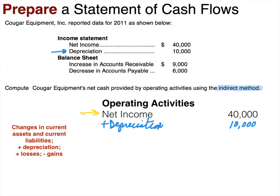We're now done with the income statement information and we move on to the balance sheet to analyze current assets and current liabilities. Accounts receivable increased — accounts receivable increases when we sell on account and haven't yet collected cash. Under accrual accounting, revenue is recorded when earned, so that $9,000 has already affected net income but hasn't affected cash. That increase in accounts receivable needs to be subtracted — a decrease of $9,000.